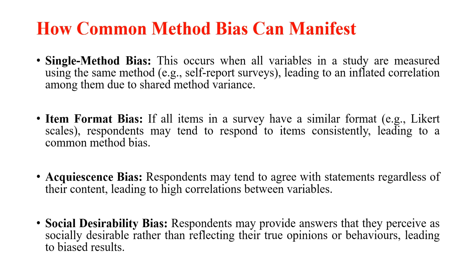How common method bias can manifest — I have summarized this into four points. Number one: single method bias. This occurs when all variables in a study are measured using the same method, for example self-report surveys, leading to inflated correlations among them due to shared method variance. Two: item format bias — if all items in a survey have a similar format, such as Likert scales, respondents may tend to respond to items consistently.